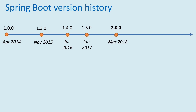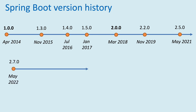The next major version, Spring Boot 2.0.0, came in March 2018, and the first version of the 2.2 branch, version 2.2.0, came in November 2019. The first version of the 2.5 branch, version 2.5.0, came in May 2021, and the last branch of the 2.x line, version 2.7.0, was released in May 2022.